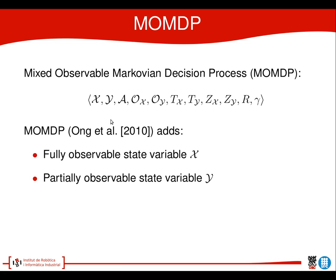Our game is better modeled using the MMDP, because we have a part which is fully observable — in our case the seeker position — and a partially observable state variable, which is the hider's position. In order to model this, the MMDP also has different transition functions for both state variables and observation functions.